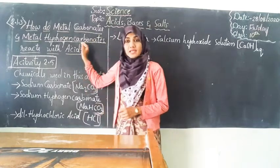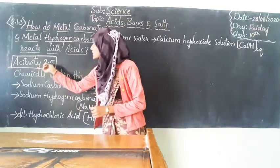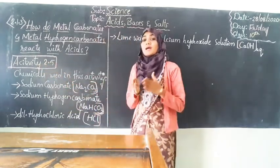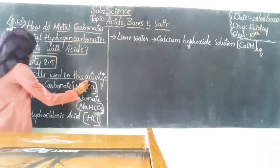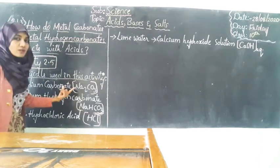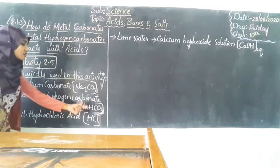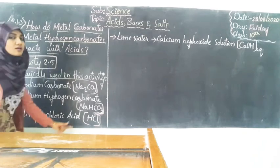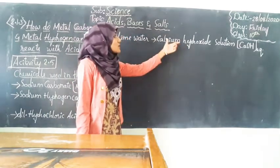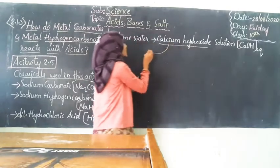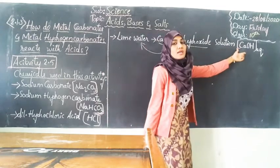To know about the chemical reaction between these compounds we must conduct an activity — Activity 2.5 in your textbooks. The chemicals involved are sodium carbonate (Na2CO3), sodium hydrogen carbonate (NaHCO3), dilute hydrochloric acid (HCl), and lime water, which is calcium hydroxide solution (Ca(OH)2).